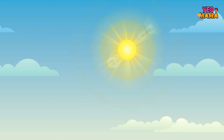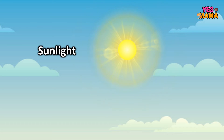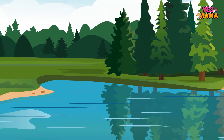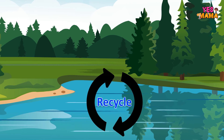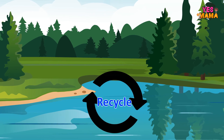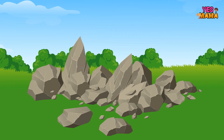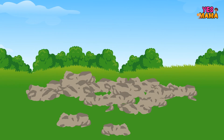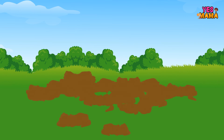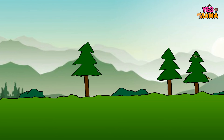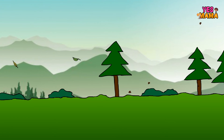For example, the sunlight will be here for many years. Water can be used many times as it gets recycled. Nature makes more rocks. Rocks break down and make more soil. More wind is also made by nature.